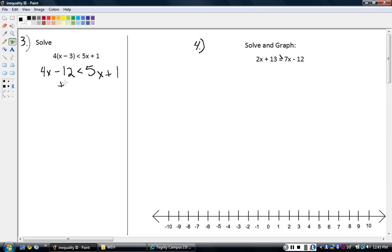Then I'm going to add 12 to both sides. So they just go away. It leaves me with four x on the left is less than five x plus 13. Then I'm going to subtract five x from both sides. Four x minus five x is negative one x, so negative x. That's gone. And that should be less than positive 13.